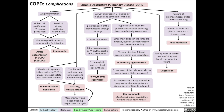COPD also results in airway obstruction, reducing inhaled air in the alveoli and terminal bronchioles. That results in reduced oxygenation of the blood passing through the lungs, causing chronic hypoxemia, which results in the kidneys compensating by increasing erythropoietin (EPO) production. EPO results in increased hemoglobin and red blood cell production, which results in polycythemia — a secondary cause of polycythemia — a greater than normal abundance of red blood cells in the blood.